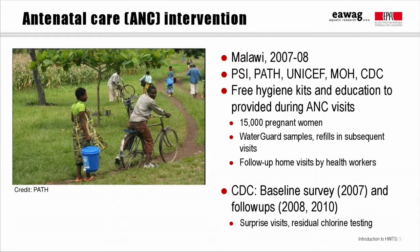Women also got refills if they delivered their baby in a healthcare facility or made postnatal care visits. The maternal and child healthcare sector in Malawi was very concerned since most women attend one antenatal visit, but only about 20% complete the recommended round of four ANC visits. Less than three-quarters deliver in a healthcare facility and less than half make a timely postnatal visit. The U.S. Centers for Disease Control evaluated the intervention with follow-ups one year and three years after the intervention, which included surprise visits, testing for residual chlorine, and visual confirmation of WaterGuard bottles.